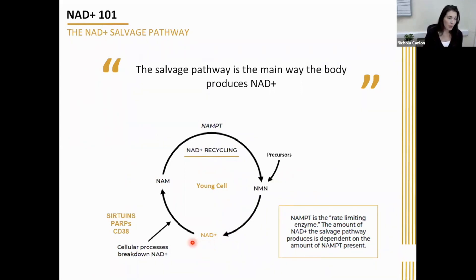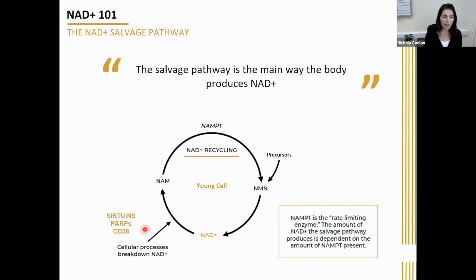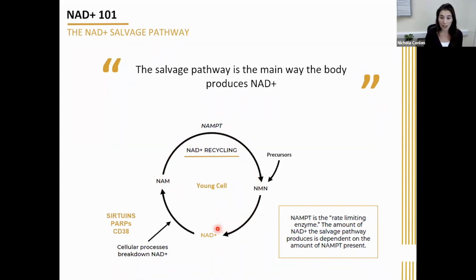The sirtuins, the PARP DNA repair enzymes, CD38 — all of these things are using up NAD. And when they use it up, they actually break it down back into the precursor nicotinamide. Now in a young healthy cell, what happens is this nicotinamide is then effectively recycled back through this process into fresh NAD again.